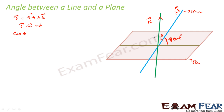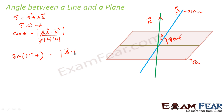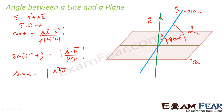So cos θ is b·n divided by the magnitude of b and the magnitude of n. If you take lambda v, the lambda cancels. Therefore cos θ equals sin(90 − θ), which equals b·n divided by |b||n|. So sin(α) — where α is the angle between the line and the plane — equals b·n divided by |b| times |n|.